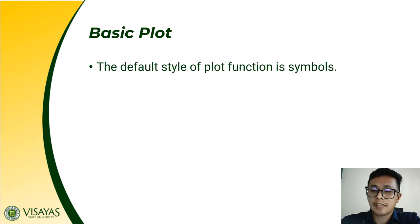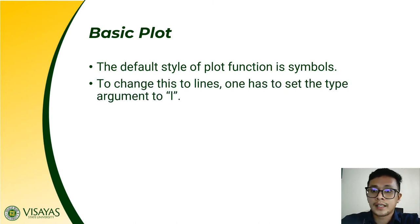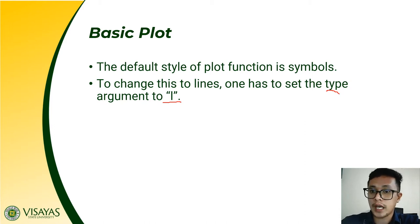The default style of the plot function uses circular symbols to present data. You can change these symbols to lines by setting the type argument to 'l'. To change from symbols to lines, set the type argument value to 'l'.